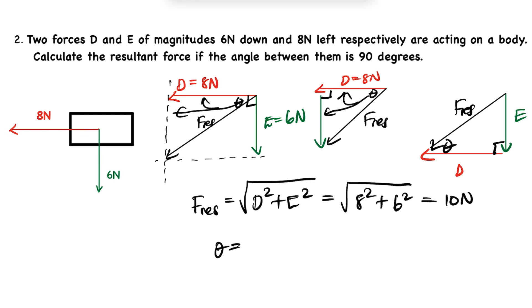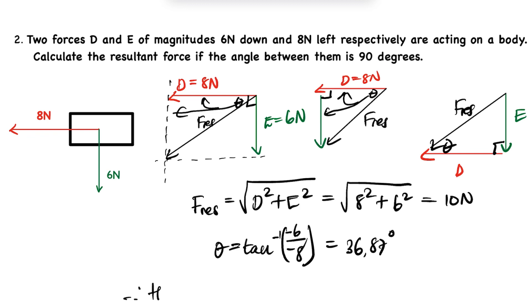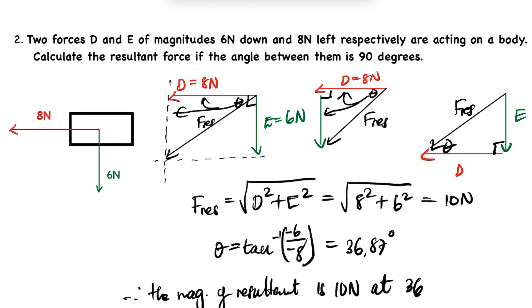For the direction, we use tan: θ = tan⁻¹(opposite/adjacent) = tan⁻¹(6/8). Note that 6 is negative (downwards) and 8 is negative (to the left). The answer is 36.87°. Therefore, the magnitude of the resultant is 10 Newtons at a direction of 36.87°.